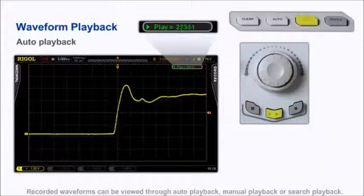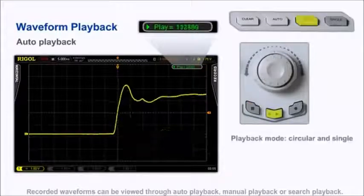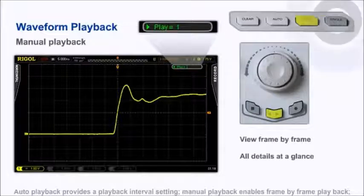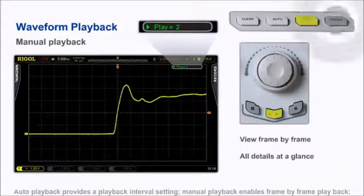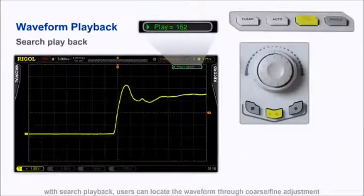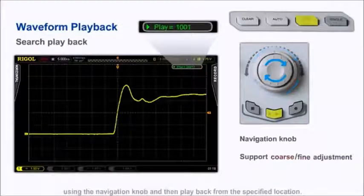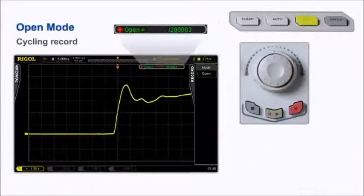Recorded waveforms can be viewed through auto playback, manual playback, or search playback modes. Auto playback provides a playback interval setting, where manual playback enables frame-by-frame playback. With search playback, users can locate waveforms through coarse and fine adjustments using the navigation knob, and then playback from that specified location in memory.